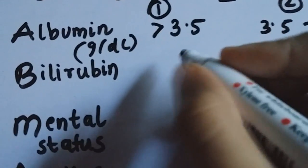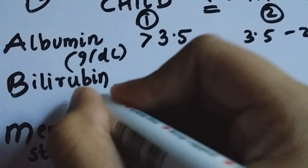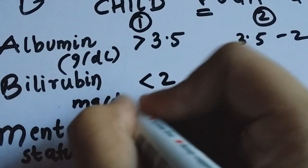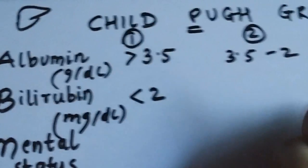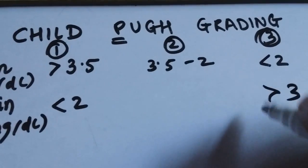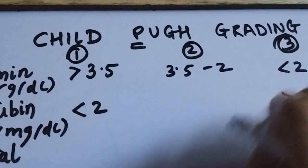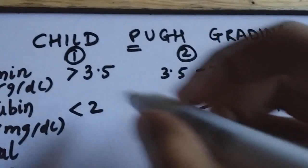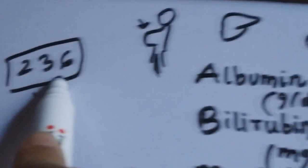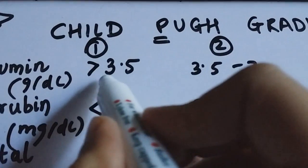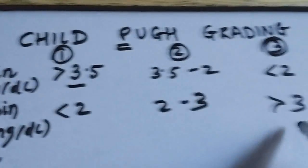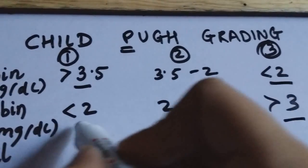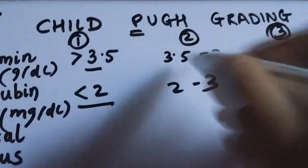For bilirubin, if the bilirubin is less than 2 milligrams per deciliter, then you give 1 point. And if it's greater than 3, then you give 3 points. And if it's between 2 and 3, then you give 2 points. So you kind of see how 2, 3 kind of recur again and again, because there's 3 out here and out here, and then there is 2 out here and here. And then in between comes the 2.